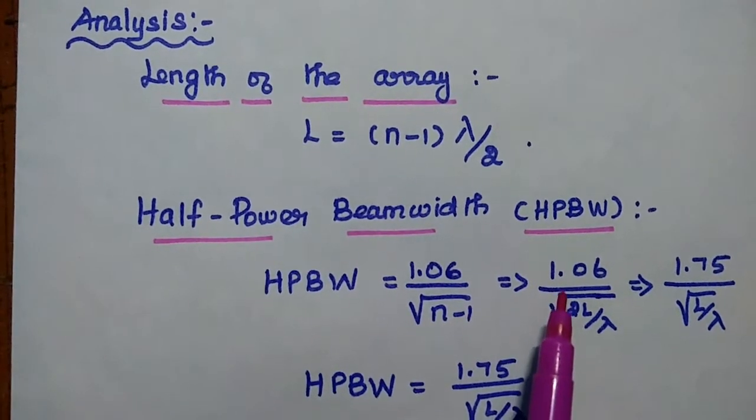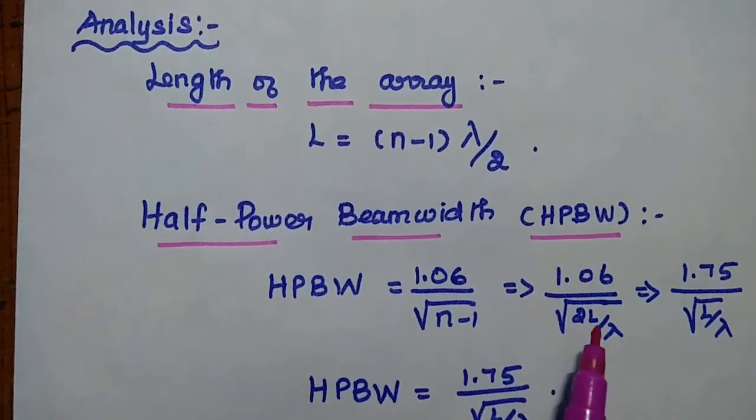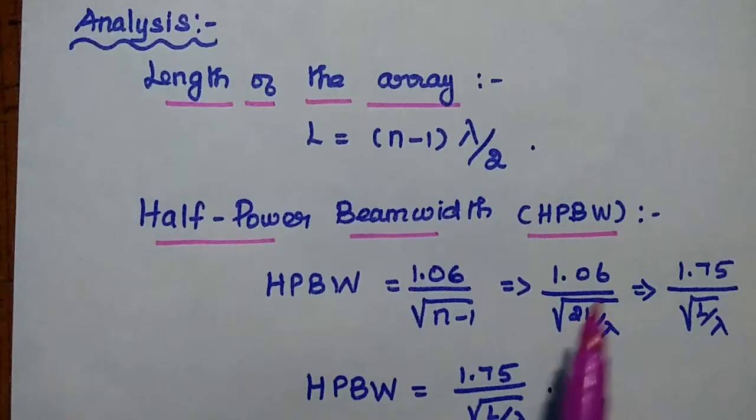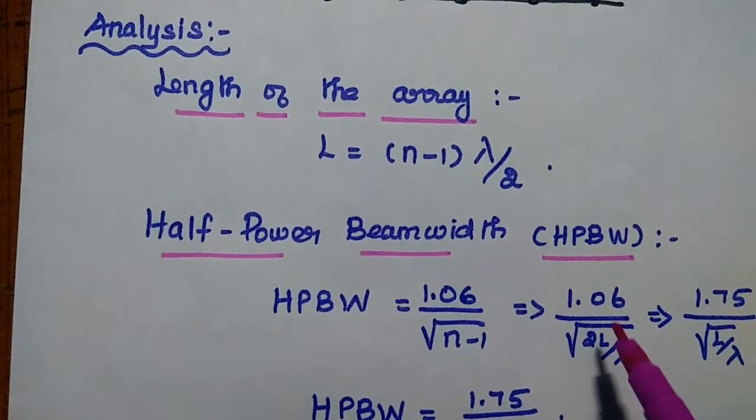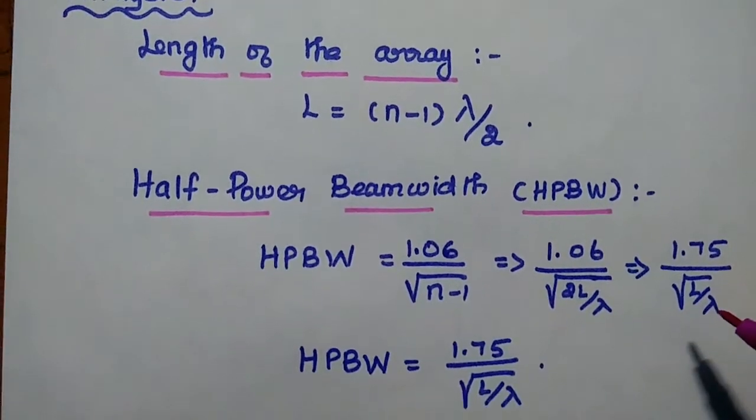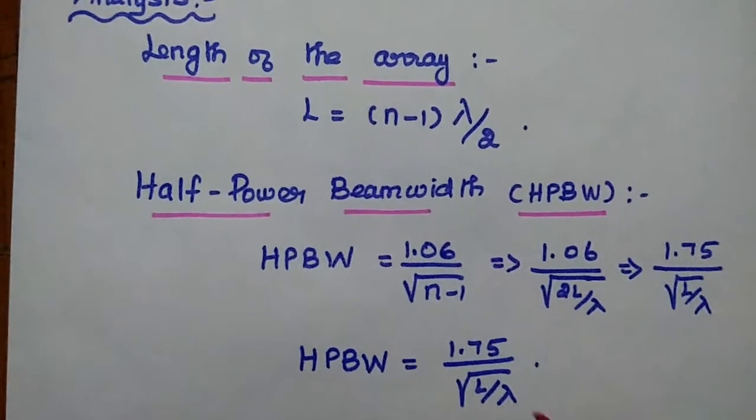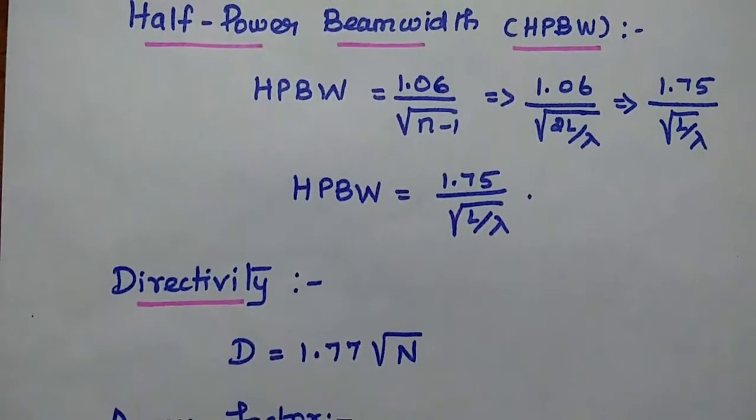That is also equal to 1.06 by square root of 2L by lambda. We can take 1.07 divided by square root of L by lambda. These are the important formulas. We can use these formulas to solve problems.